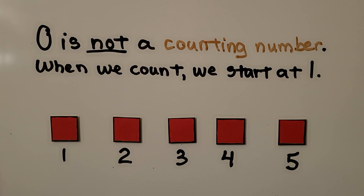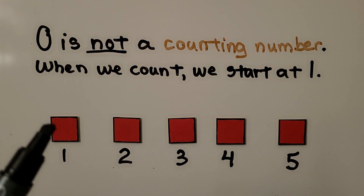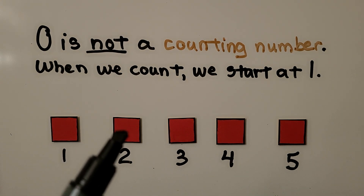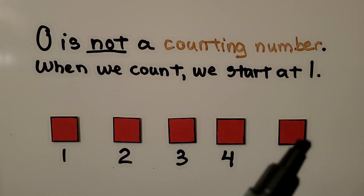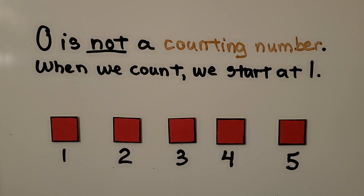Zero is not a counting number. When we count, we start at one. To count these red squares, we start with one, then two, three, four, five. We don't start with zero. We start with one when we count objects.